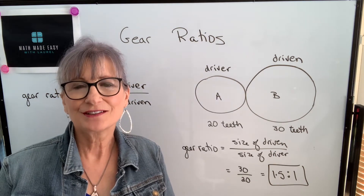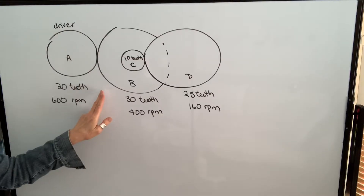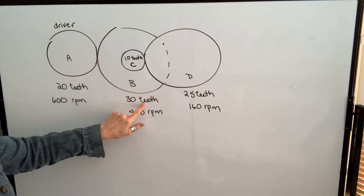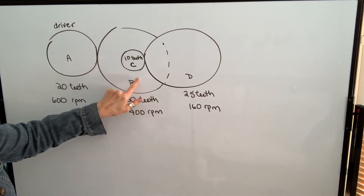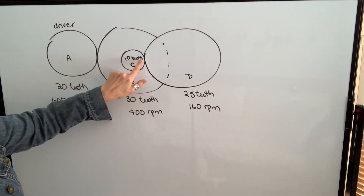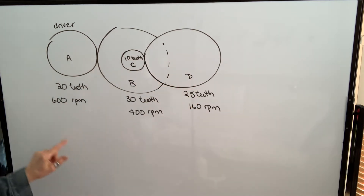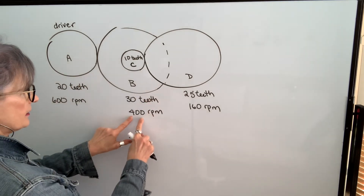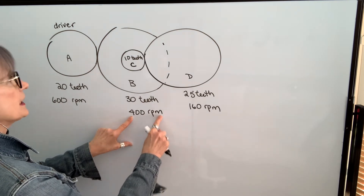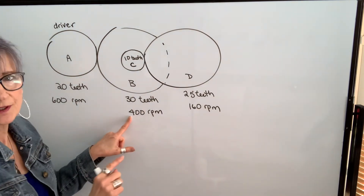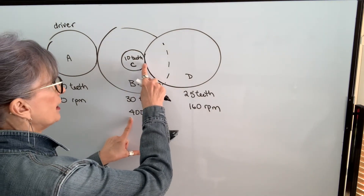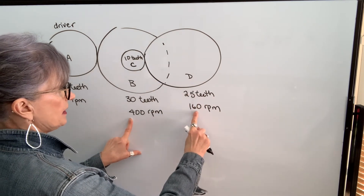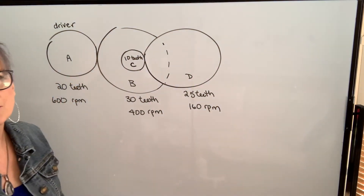Let's take a look at how we calculate gear ratio for a compound gear train. A has 20 teeth, B has 30 teeth. Then on the same shaft as gear B is gear C, which has 10 teeth, enmeshed with gear D, which has 25 teeth. We started with a speed of 600 RPM for A, found B at 400 RPM, C also at 400 RPM because they're on the same shaft, and then we calculated the speed of D to be 160 RPM.